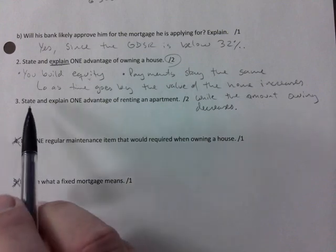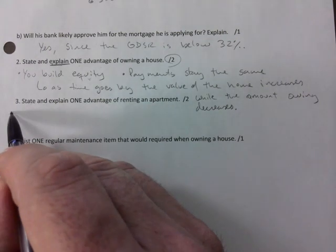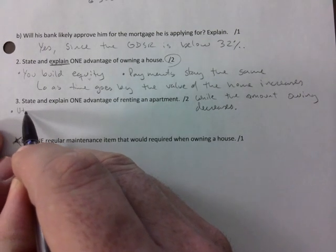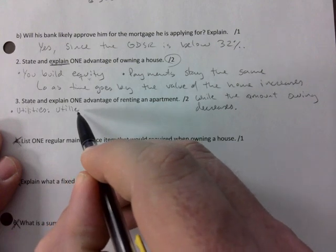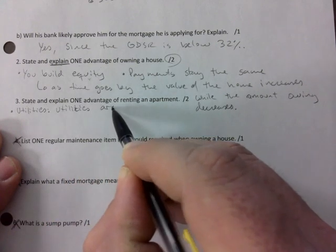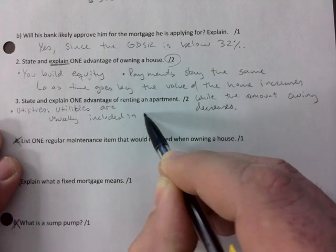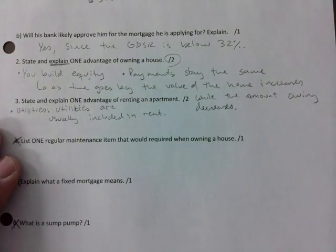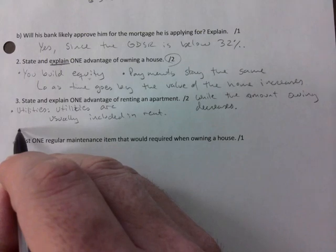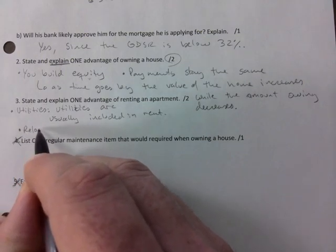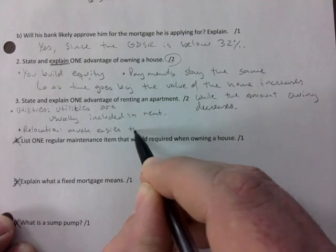State and explain one advantage of renting. You can say utilities are usually included in rent. So you can say that would be heating, electricity, gas, you name it. What else? It's easier to relocate. Relocation much easier than owning a home.